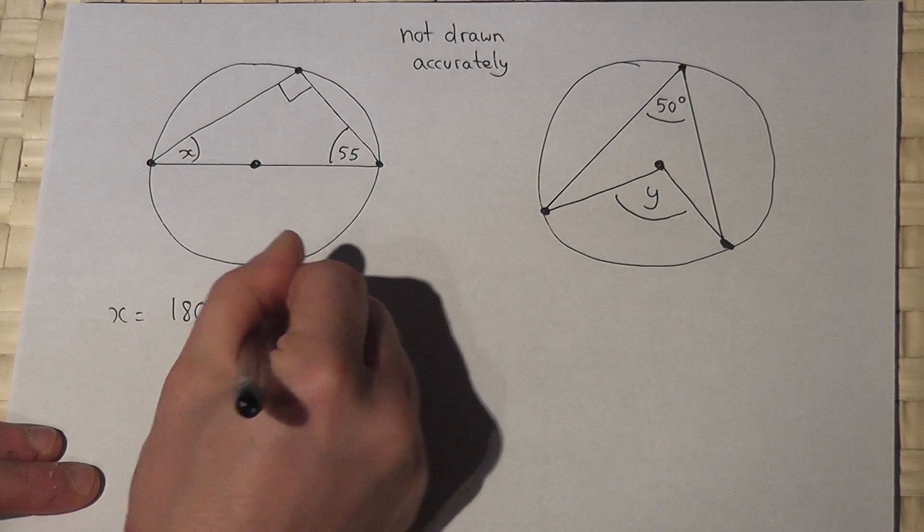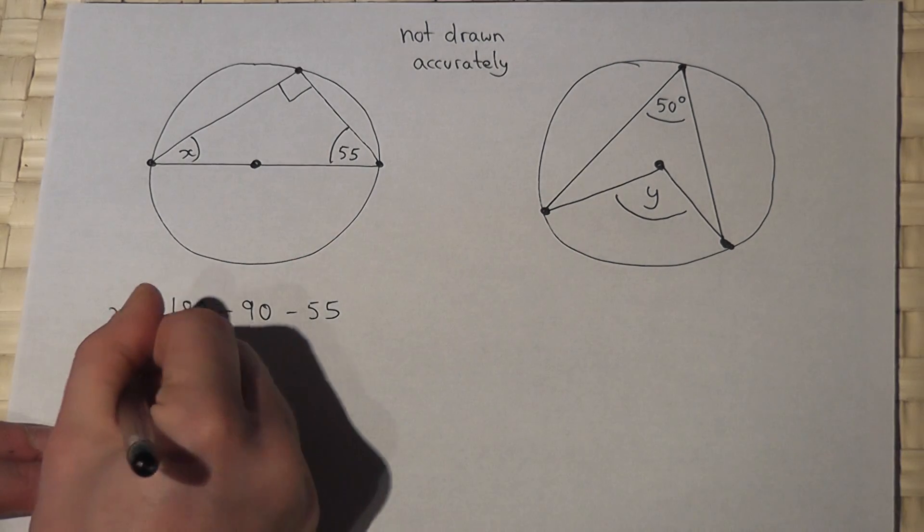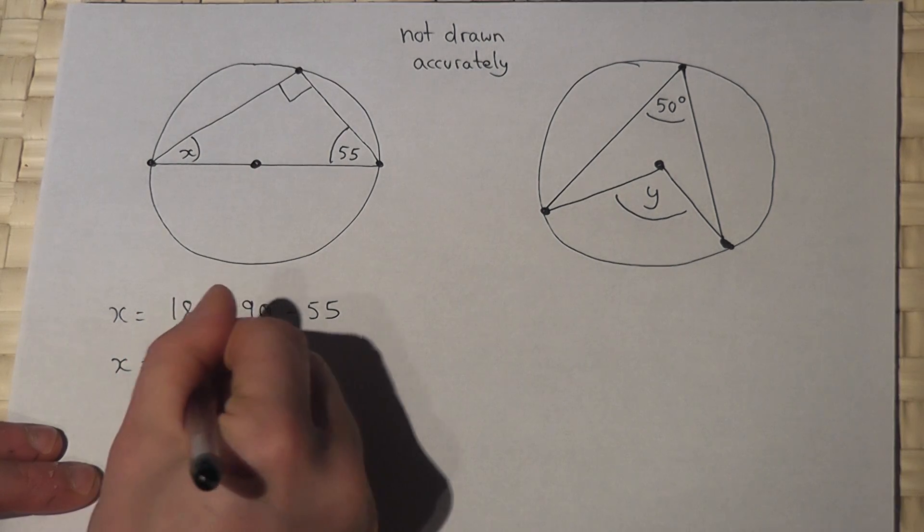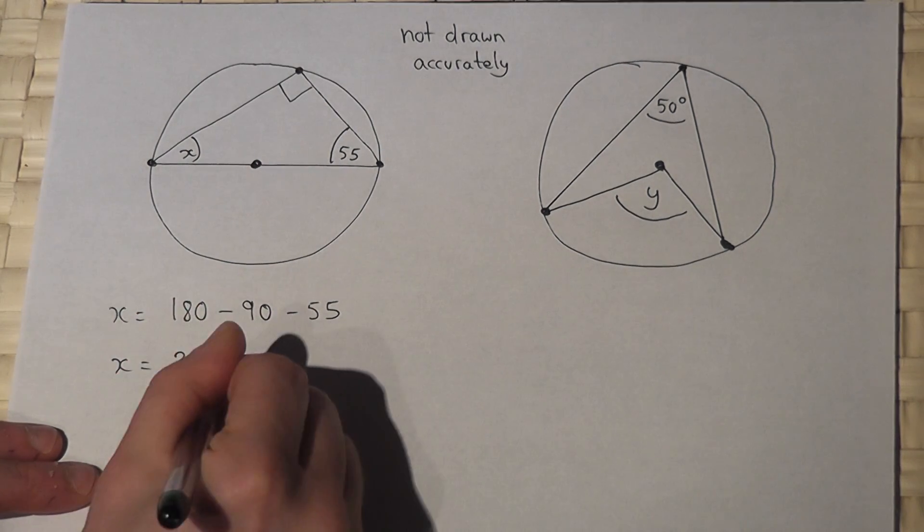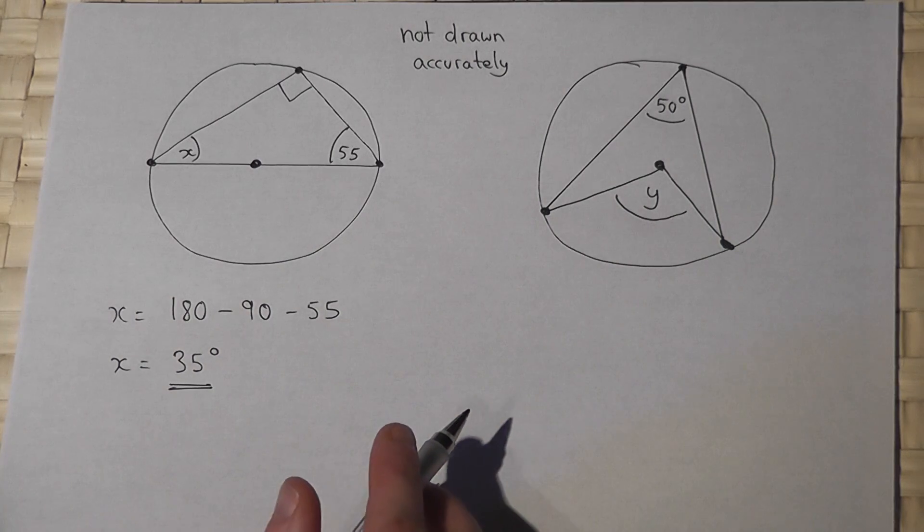take away 90, take away 55. So x will just equal 35 degrees. So that's one important fact.